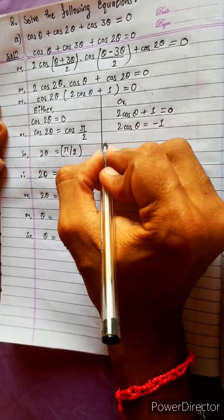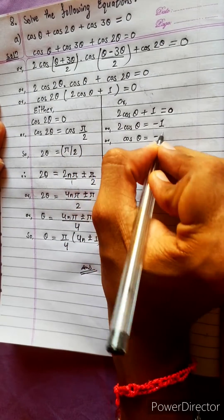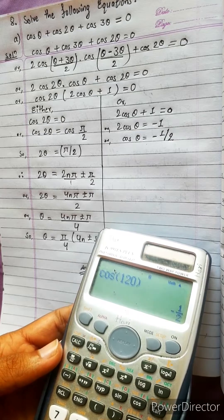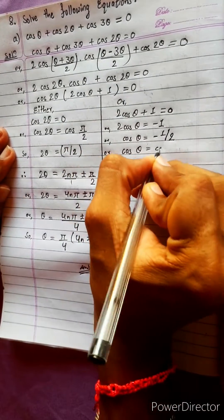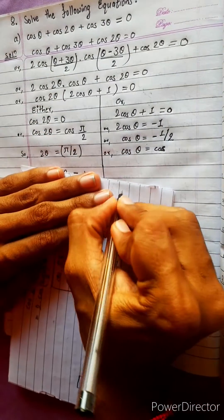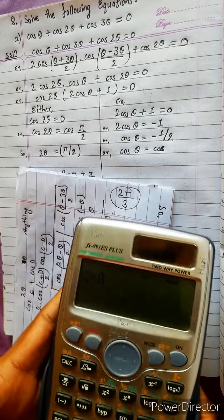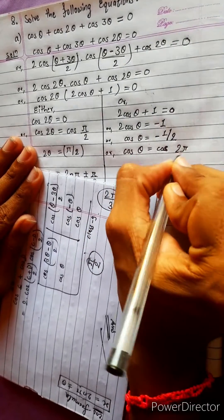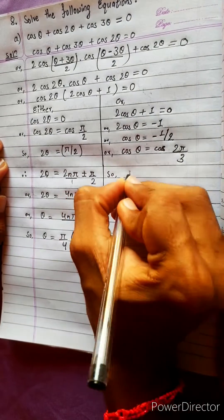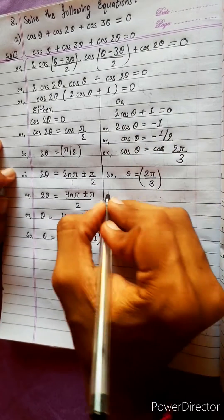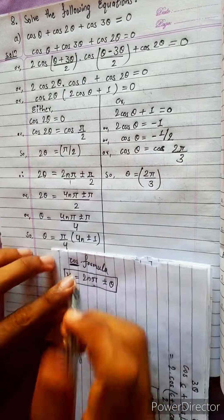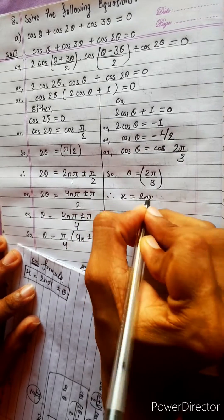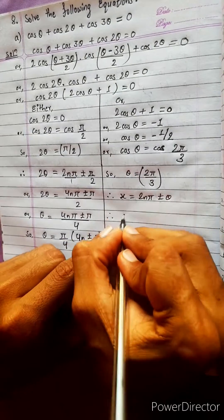For the second case: 2 cos θ = −1, so cos θ = −1/2. Applying the general solution: θ = 2nπ ± θ, where the reference angle θ satisfies cos θ = −1/2, giving θ = 2π/3.